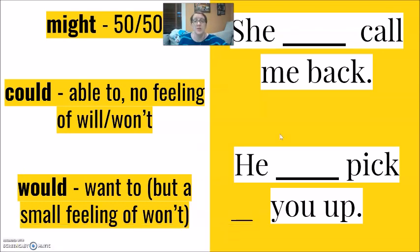When we come to would, then there is a feeling of want, desire. But also a small feeling of won't or can't. For example, she would call me back. She wants to call me back, but something is blocking her. Something is stopping her. Her phone is broken. Her time is too short. She would call me back, but she can't. He would pick you up, but something is stopping him. His car is broken. His tire is flat. He would pick you up, but he can't.